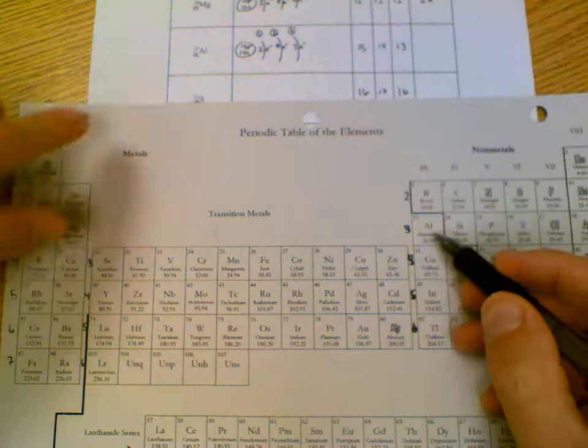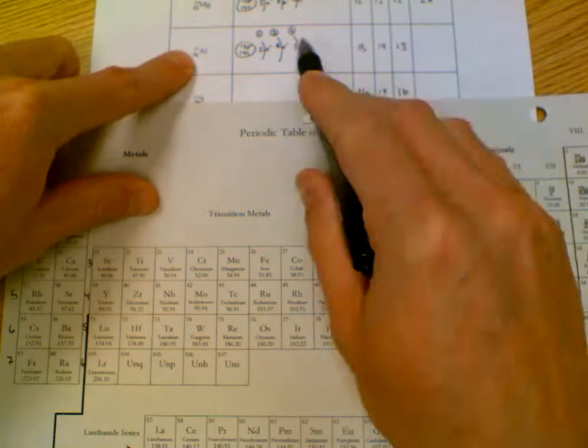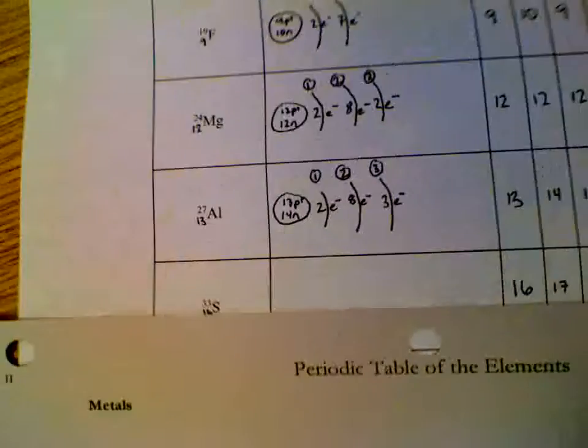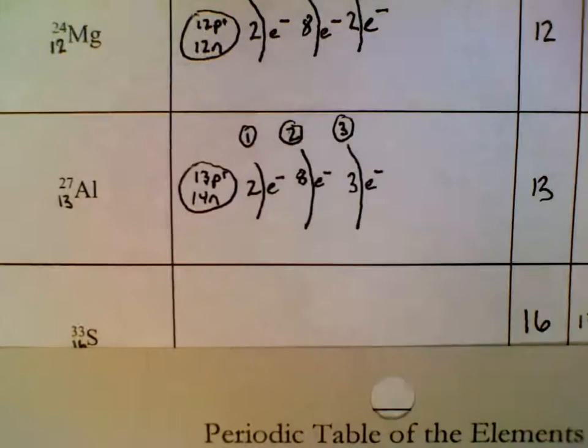Counting squares so we can get to the one that we're looking at. Since there's 3 electrons in the outermost, there's 3 valence electrons. This is what aluminum's Bohr diagram should look like.